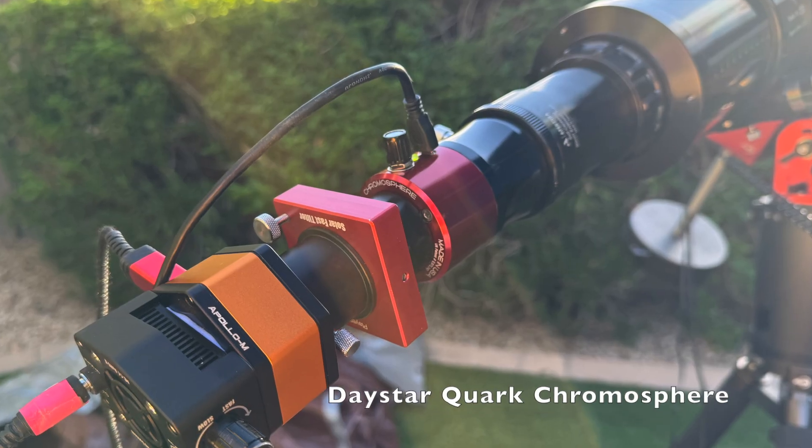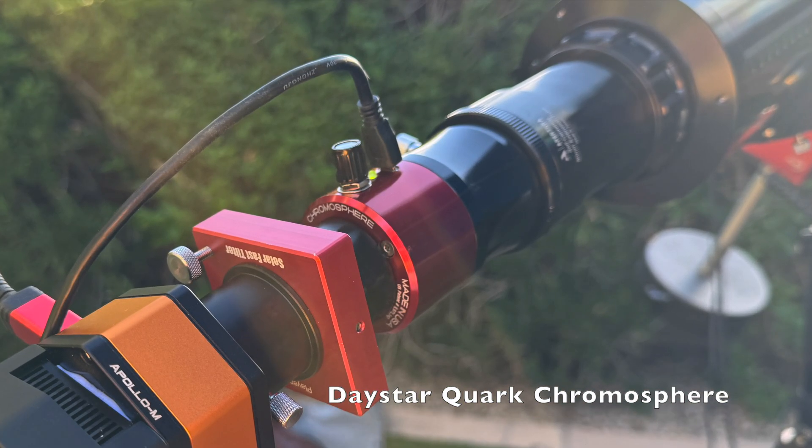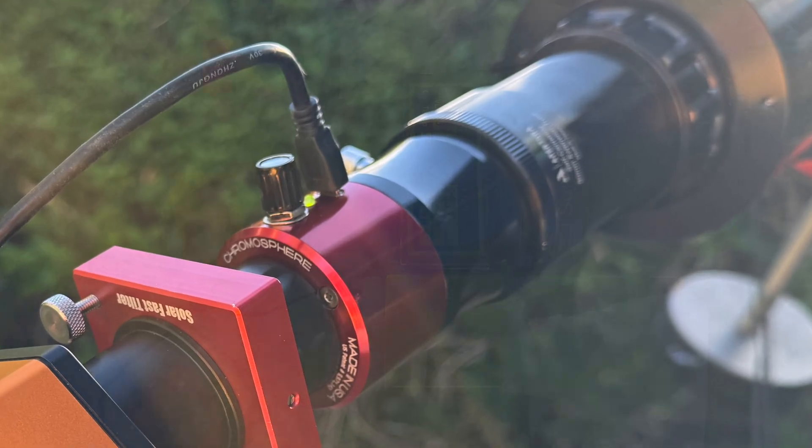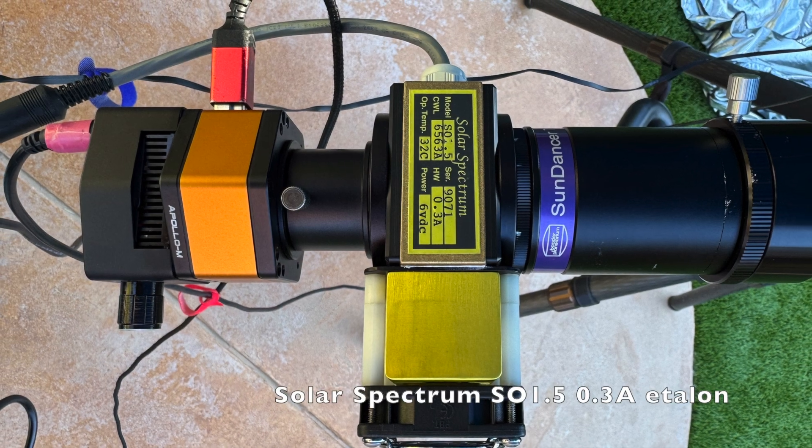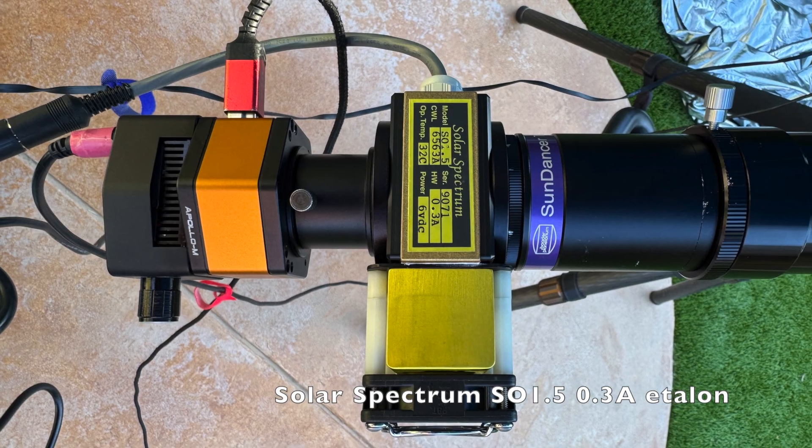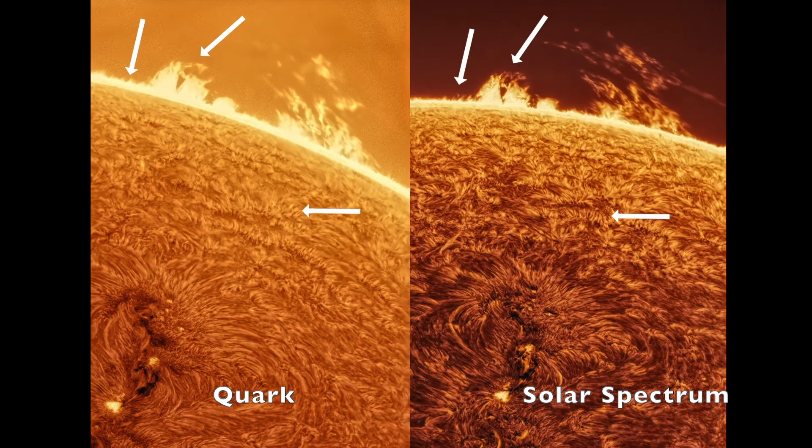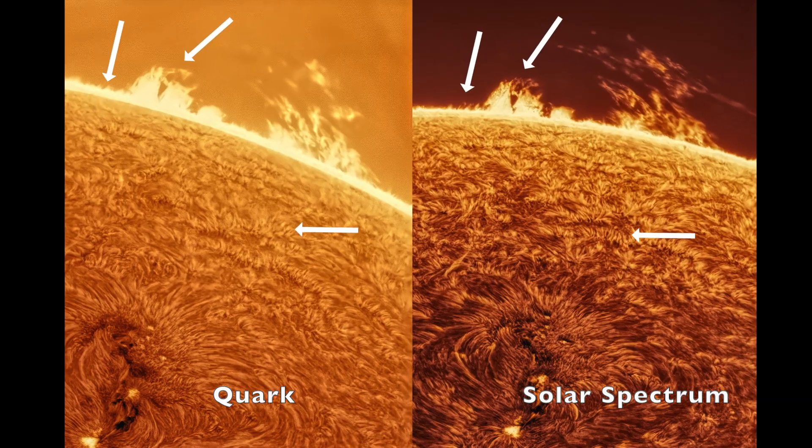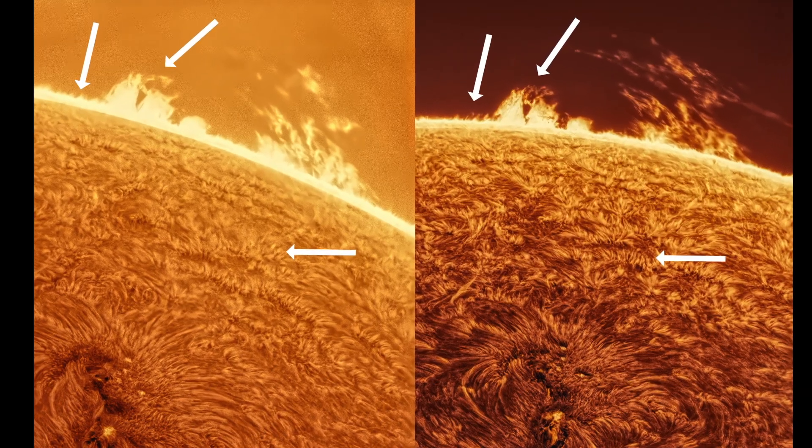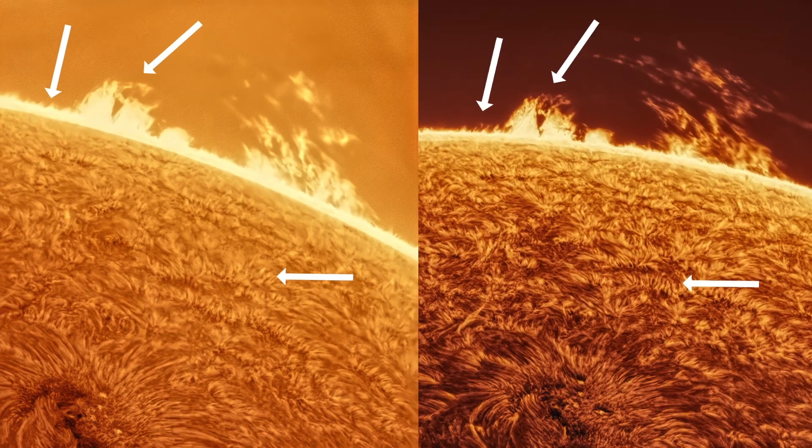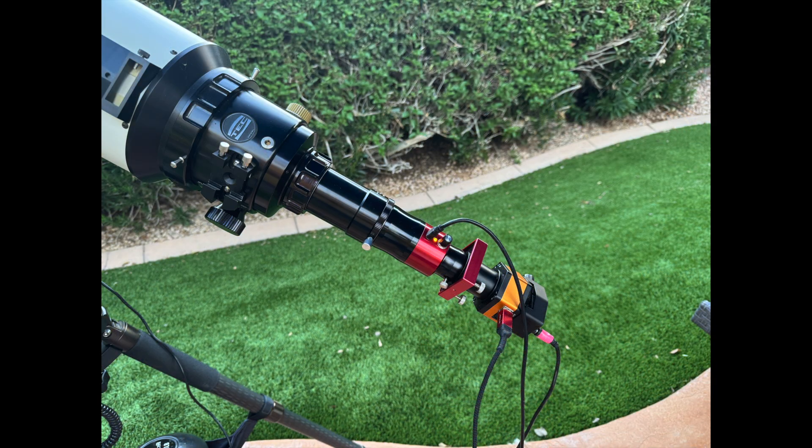Fourth, we have solid Fabry-Perot etalons. When made properly, these can produce extremely narrow bandpasses down to 0.3 angstroms, ideal for high-resolution H-alpha work. Unlike the first methods, which are usually integrated into telescopes, mica-based etalons are designed to work with an existing refractor telescope.